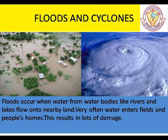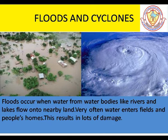Floods and Cyclones. You must have seen on the television or read in the newspapers of floods occurring in the monsoon seasons when it rains very heavily, continuously for days together in some places. Floods occur when water from water bodies like rivers or lakes flow onto nearby land. Very often, water enters fields and people's homes. This results in lots of damage.